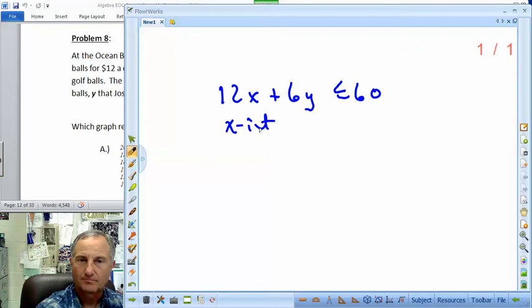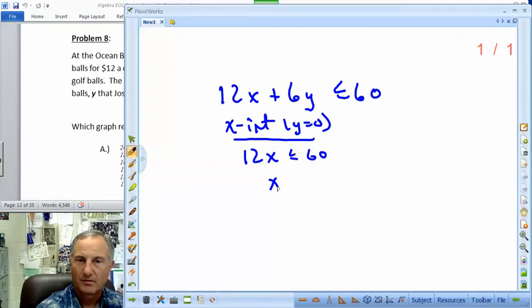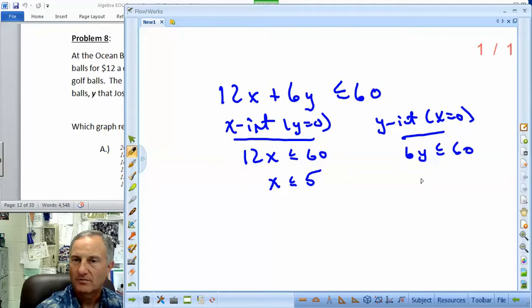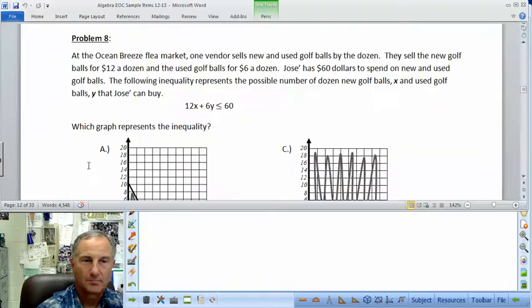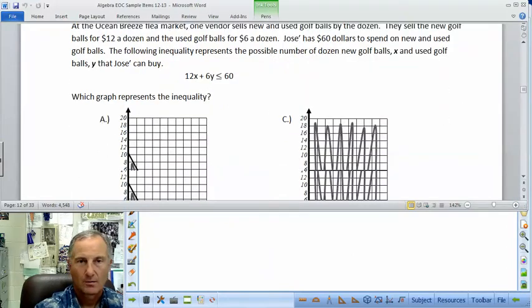So, for the x-intercept, make y equal to 0. So, that cancels out, and I get 12x, because 0 times 6 is 0. It's less than or equal to 60. Divide the 12 over, and you get 5. So, my x is going to be at 5. My y-intercept, we make x equal to 0. So, if x is 0, 12 times 0, that's gone. I get 6y less than or equal to 60. Divide that out. I get 10. So, my x is at 5, and my y is at 10.